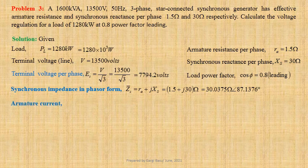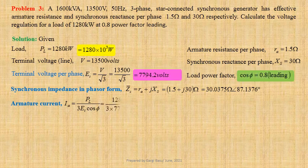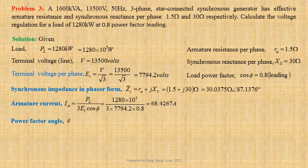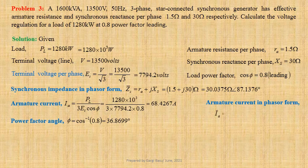Armature current: Ia equals PL divided by 3 times ET times cos φ. Using values we get 1280 × 10³ divided by 3 × 7794.2 × 0.8, giving 68.4267 ampere. Since the power factor is 0.8 leading, armature current in phasor form is Ia equals 68.4267 ampere at an angle plus 36.8699 degrees.